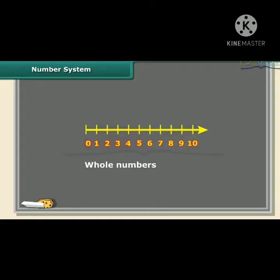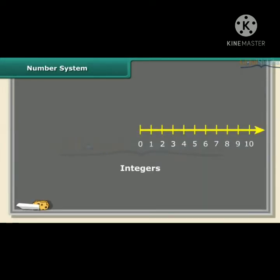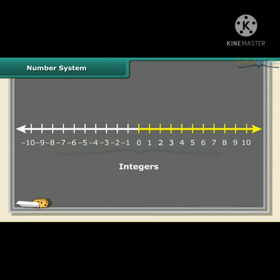Whole numbers are simply the numbers 0, 1, 2, 3, 4 and so on — there are no fractions. Natural numbers are the positive whole numbers except 0. Integers are like whole numbers but they also include negative numbers, so integers can be negative, positive and 0.